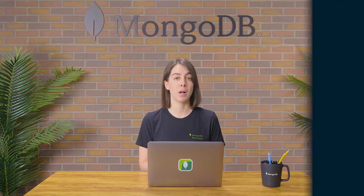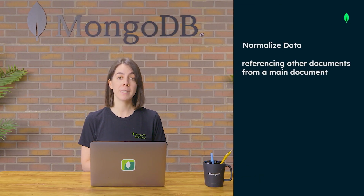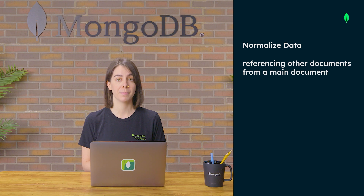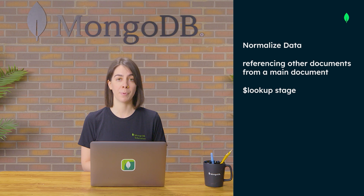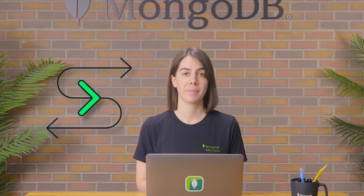The document model also makes it possible to normalize data by referencing other documents from a main document, similar to the normalized data model you're familiar with in SQL. You can even mimic a join operation by using the $lookup stage. The key point is that in MongoDB, you're not constrained to one way of storing data and creating relationships. You can choose to normalize some data, embed other data that will be accessed together, or use any combination of storage methods that make sense for your application.